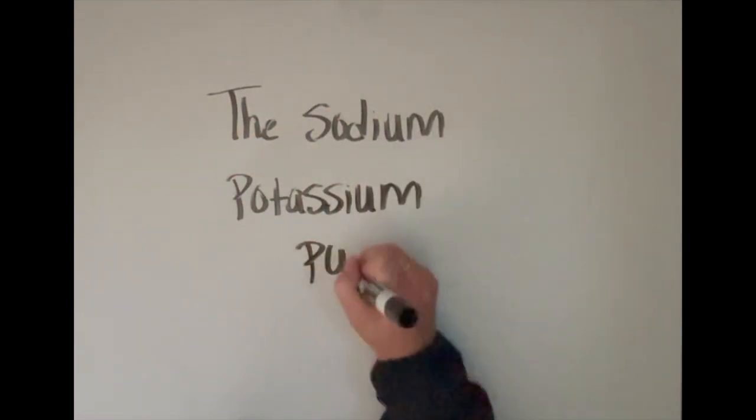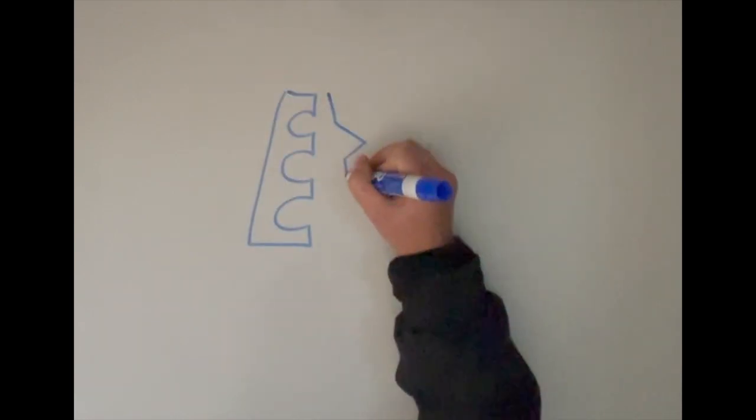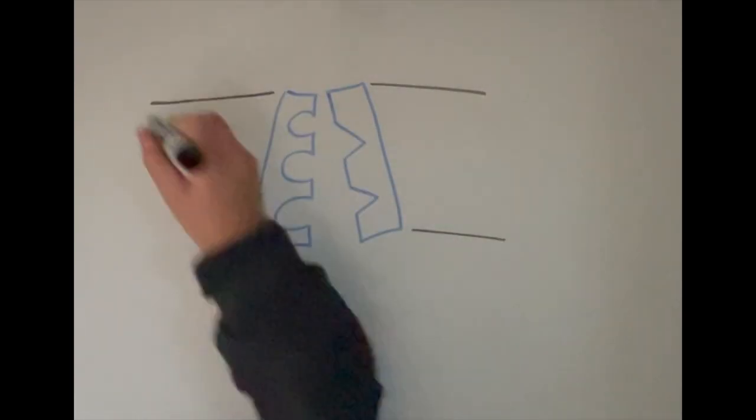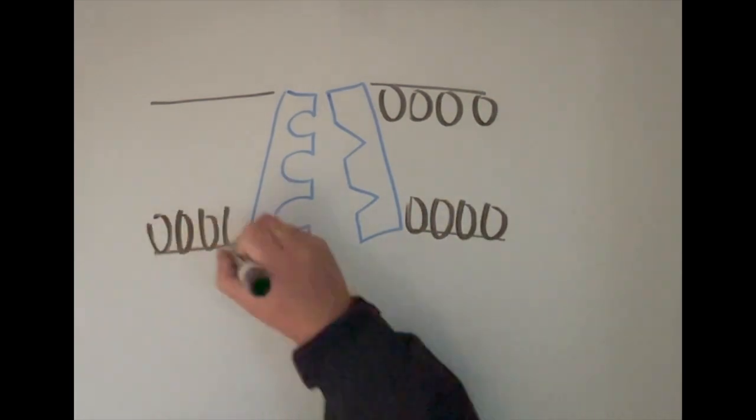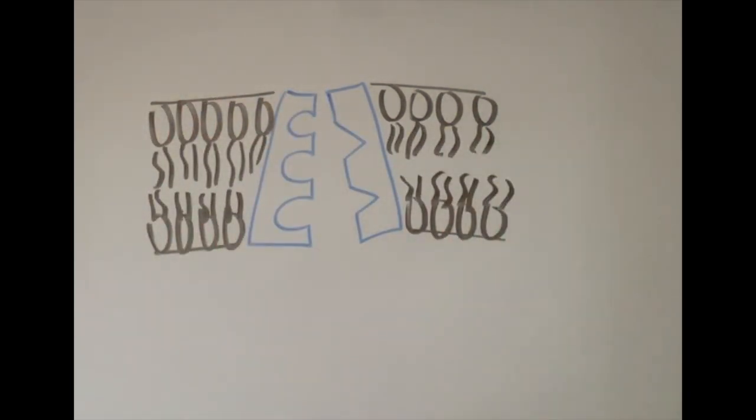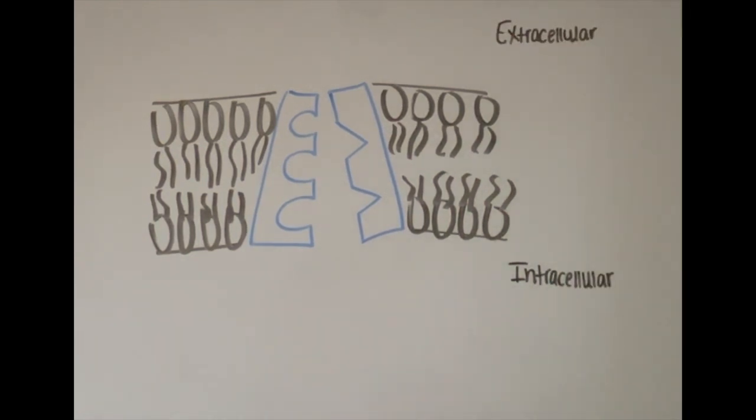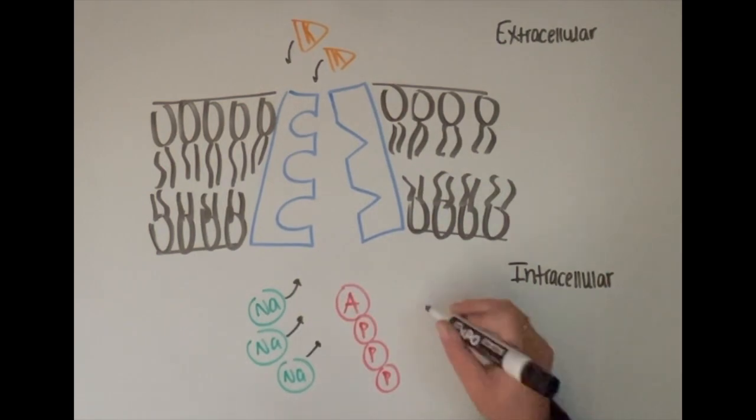This video is about how the sodium potassium pump works. The sodium potassium pump is an active transporter embedded in the plasma membrane that uses one molecule of ATP to pump three molecules of sodium out of the cell and two molecules of potassium into the cell.